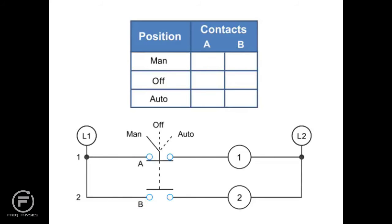In this illustration of a three position selector switch, a third row is added to the truth table. So we now have a manual position, an off position, and an automatic position. Thus, in the MAN position, A is X, or closed, and B is O, or open. At the OFF position, both A and B are O, or open. With the selector switch set to AUTO, contact A is O, or open, and B is X, or closed.